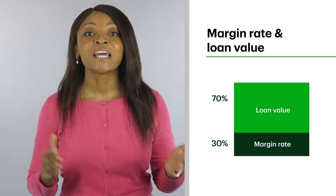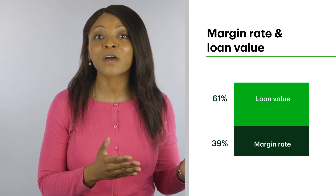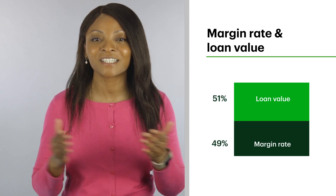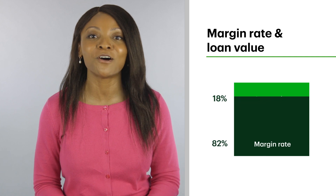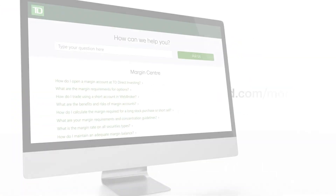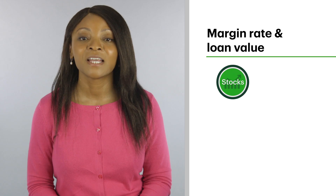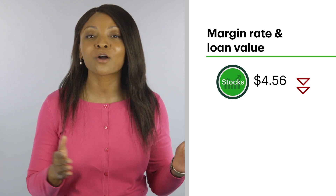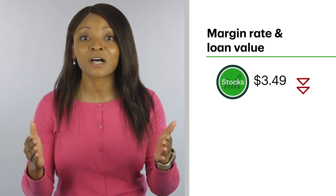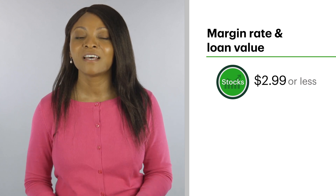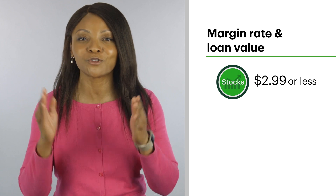For example, if a stock is now deemed higher risk, then the loan value might change from 70% to 50%, and some may not be marginable at all. To see the list of investments with higher margin requirements, click here. On the other hand, if that stock were to drop below $3 a share, then the loan value would drop to 0%, meaning you would have to pay 100% of the trade with your own cash.